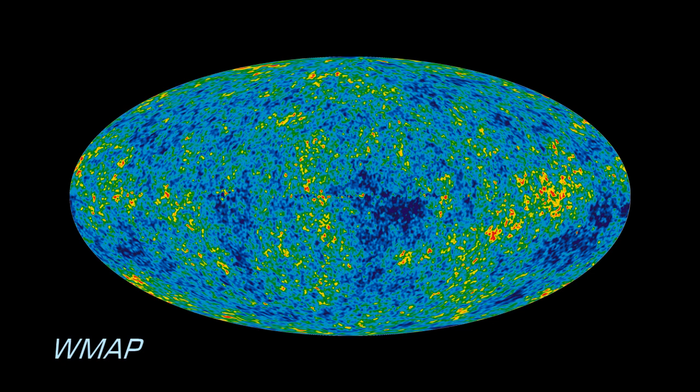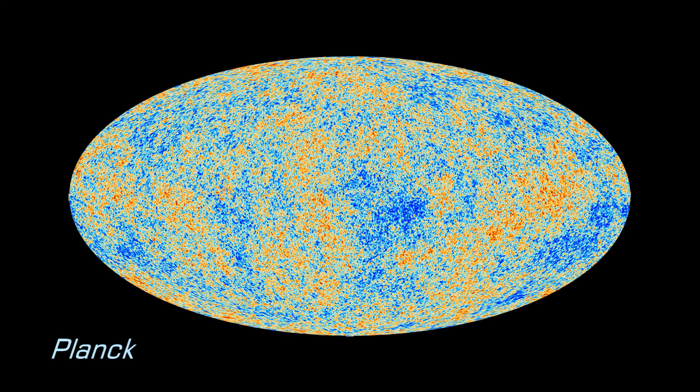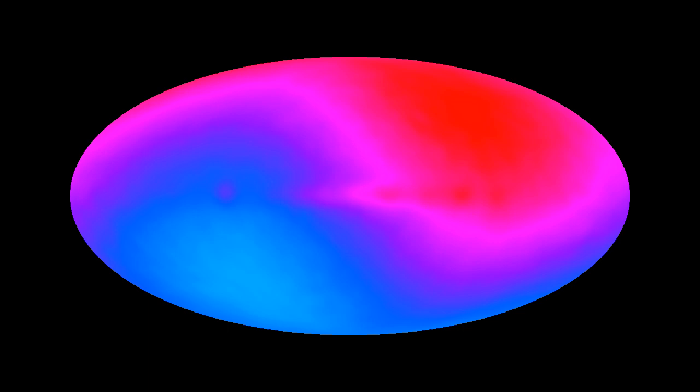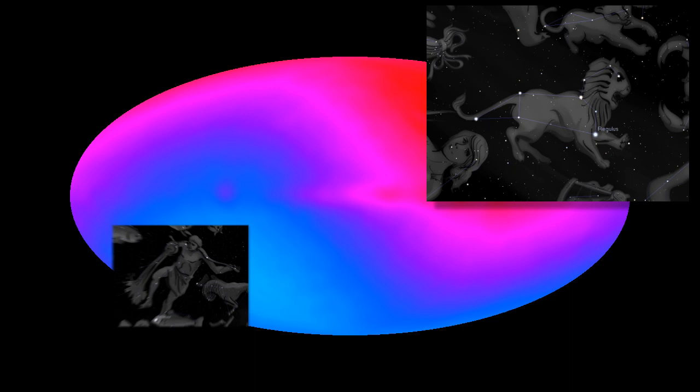To produce these maps, though, another source of anisotropy must be accounted for and subtracted from the data, the dipole. The measured radiation appears slightly warmer in the direction of the constellation of Leo, and cooler in the opposite direction of the constellation of Aquarius. The temperature difference corresponds to a speed of 371 km per second.